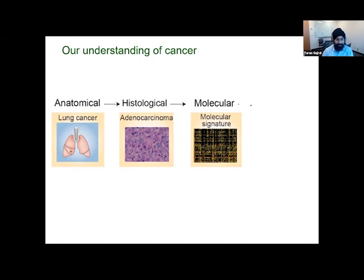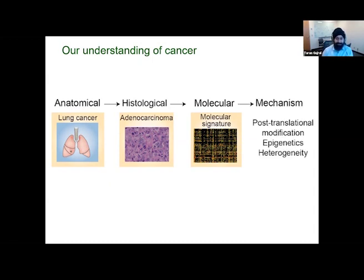However, despite these progresses, the number of patients that respond to any given treatment remains low. Even the patients who initially respond ultimately develop resistance. That's because there are still gaps in our understanding of how cancer actually talks to other cancer cells or other cells in the microenvironment. We still don't quite understand the mechanism behind many fundamental properties of cancer cells, such as heterogeneity — how one cancer cell, even within the same tumor, is different from other cells.